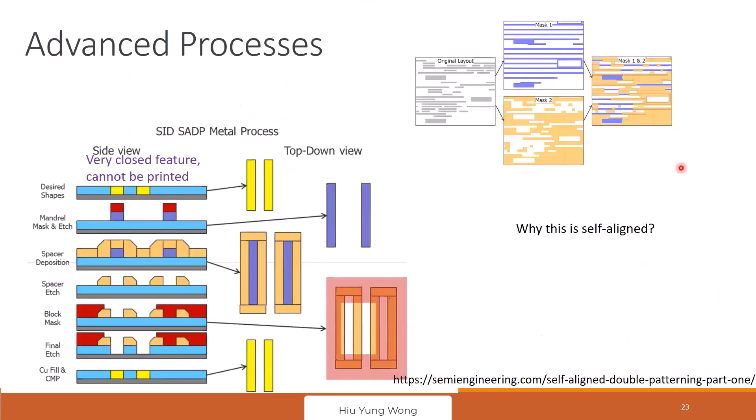I still want to introduce a few more new technology because you are going to hear about this a lot in the future. Another feature is so-called Mandrel. So look at this. I actually want to have these two patterns. But I cannot just ask it to print two photo resists because in lithography, they won't print because they're too close to each other. So what do I do?